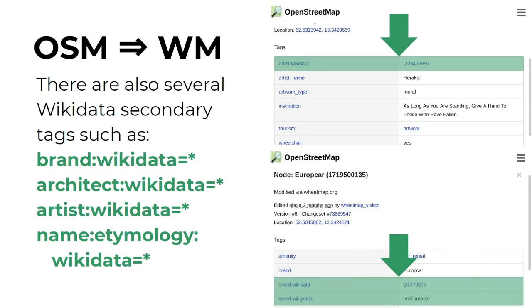We use these secondary tags to exactly specify what we are referring to. For example, there's an artwork in OpenStreetMap created by an artist named Herakut — but who is that? So in order to specify exactly, we use artist:wikidata and that QID number so you can be exactly sure which Herakut it really is. This is also useful if you're tagging objects in a different language — for example, in Japan you might have a fast food restaurant called McDonald's in Japanese, which you can tag using the brand:wikidata tag pointing to the McDonald's item in Wikidata.